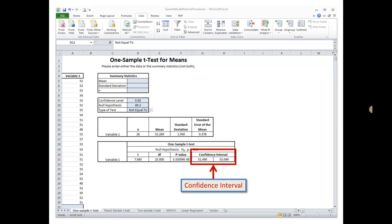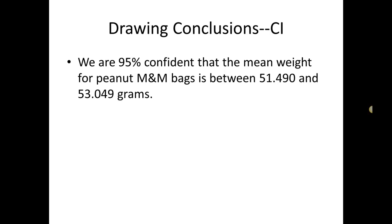So the confidence interval, the lower bound is going to be 51.490 and the upper bound is going to be 53.049. So how do we interpret that confidence interval? Well a confidence interval tells us where we expect mu, the population mean, to be. For this problem we'd say we are 95% confident that the mean weight for peanut M&M bags is between 51.490 and 53.049 grams.